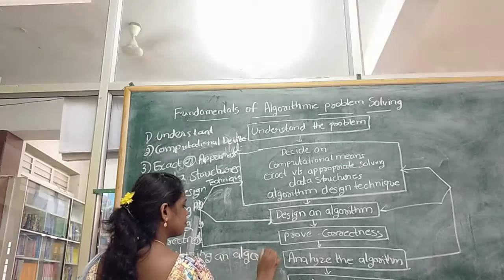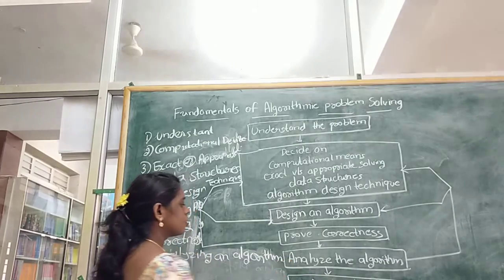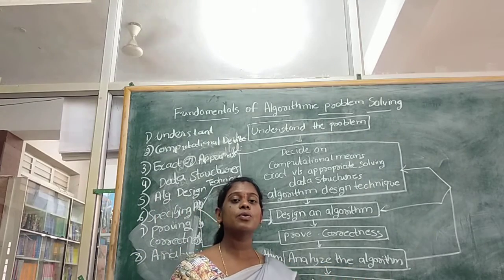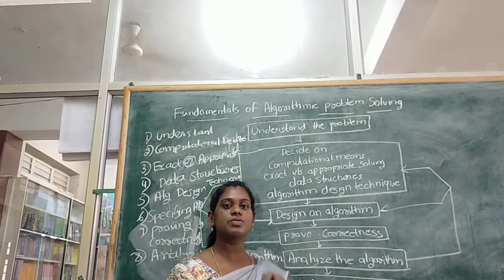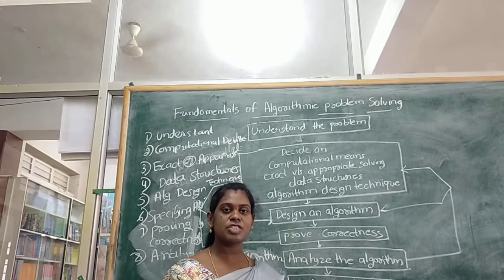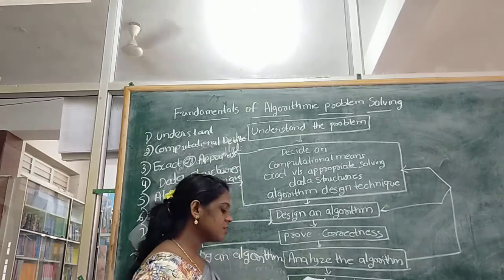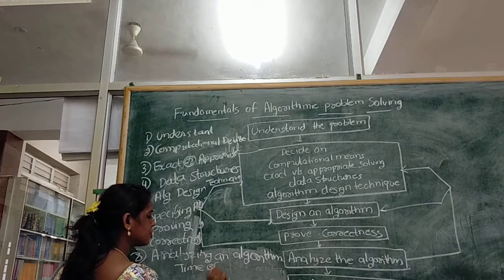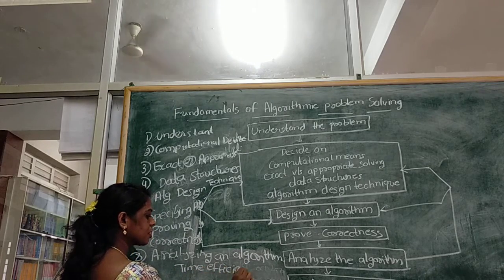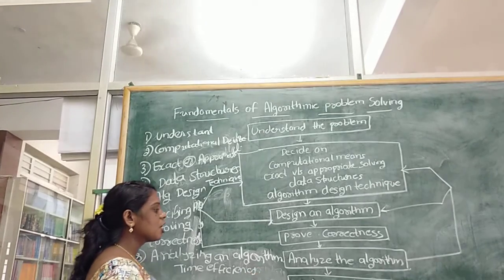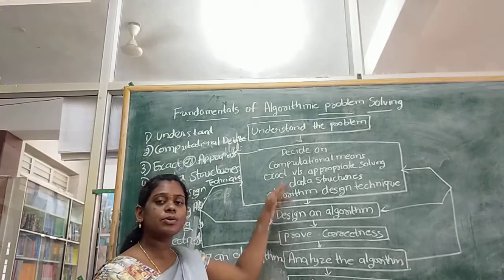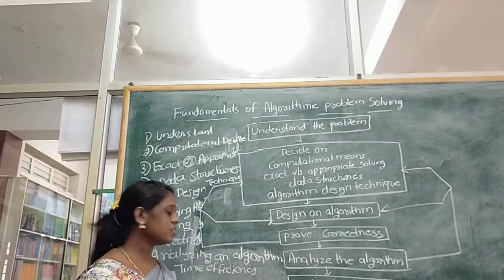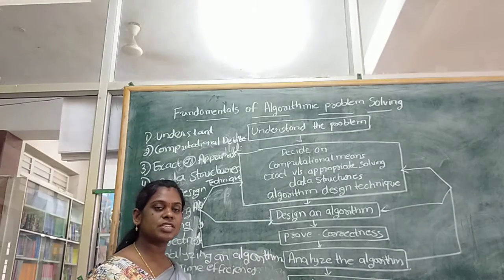After that, you have to analyze the algorithm. How do you analyze it? By using time efficiency, space efficiency, and simplicity. Time efficiency means how much time it will take to execute the algorithm — that is called time efficiency.